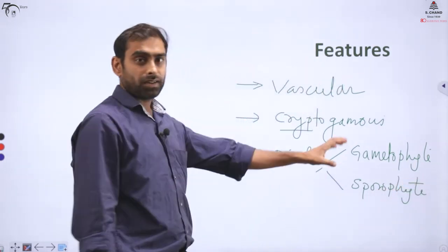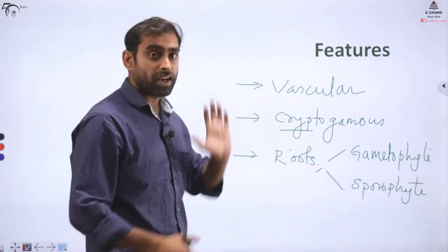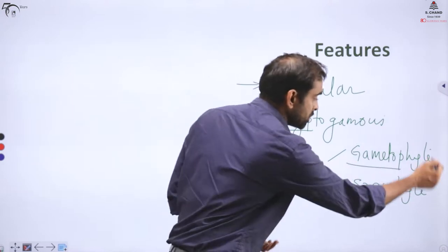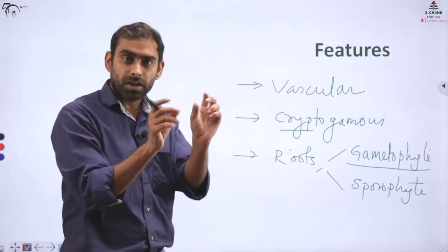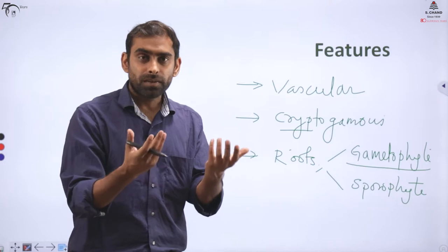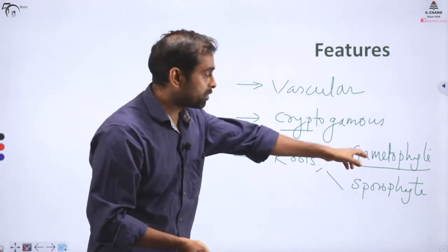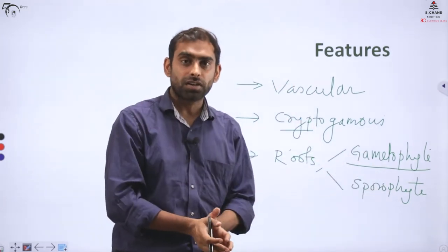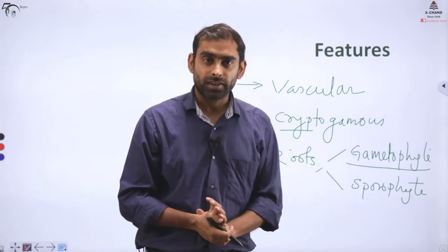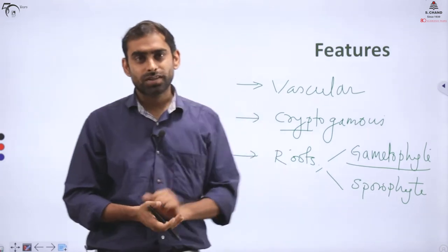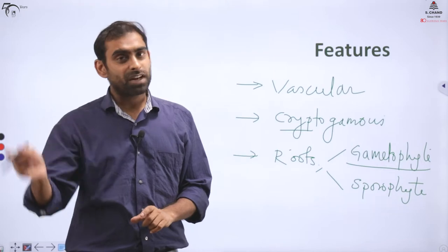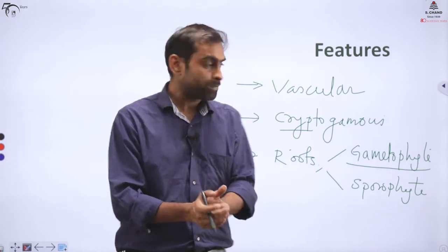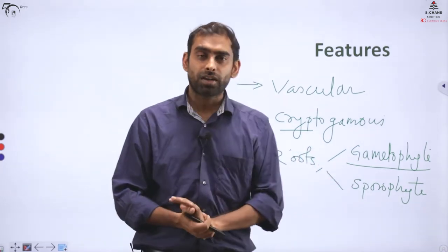I hope you have knowledge of what sporophyte and gametophyte are. As a reminder: the structure involved in gamete formation — where sex cells or gametes are produced and can fuse to form a zygote — is called the gametophyte. The structure in the plant that produces spores is called the sporophyte. A small recall question: in bryophytes, is sporophyte dominant or gametophyte dominant?